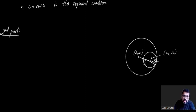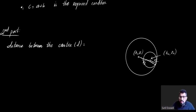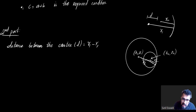The distance between the centers for internal touch equals R1 minus R2. That is, d equals R1 minus R2. Since the center C1 is at origin with radius a, and C2 is at (c, 0) with radius b, the distance between centers is c and the radii are R1 equals a and R2 equals b.